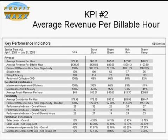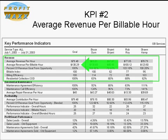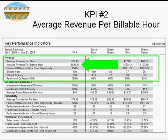Today's ProfitMax Potential point is going to focus on the second key performance indicator: average revenue per billable hour. This KPI is found on the key performance indicator report in the revenue section. Each item in this section is referring to the time the technician spends performing demand service work only — no maintenance.